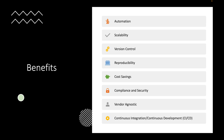Reproducibility — infrastructure code enables the recreation of entire environments in a consistent manner. This is valuable for development, testing, and disaster recovery scenarios. Documentation is another benefit: if you're getting audited, you can provide your code and show that you are doing things in the right fashion.